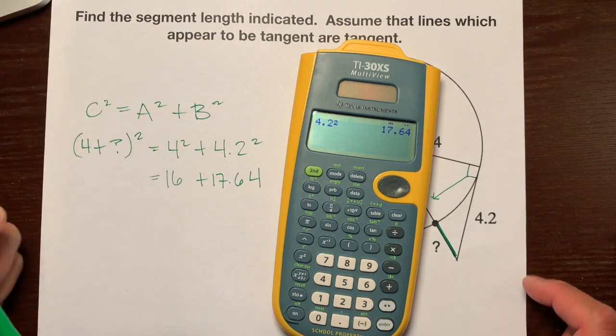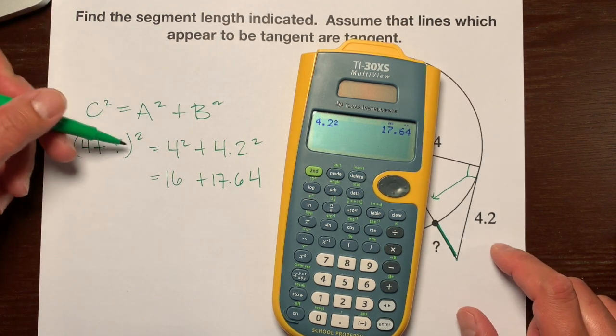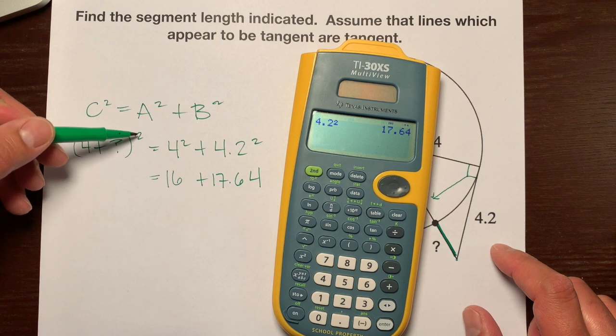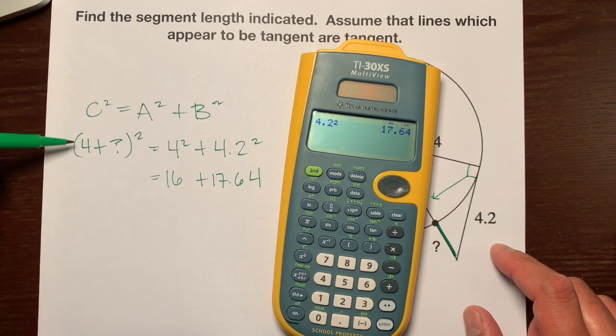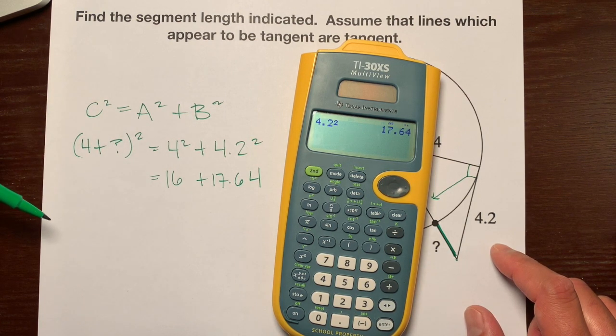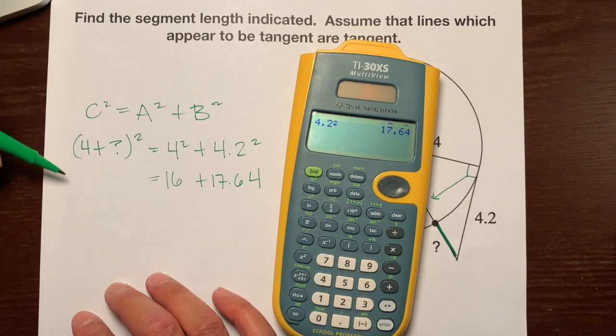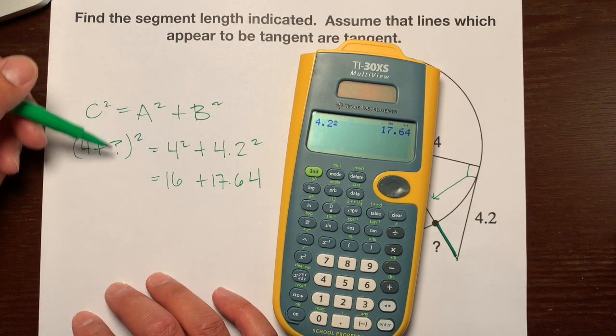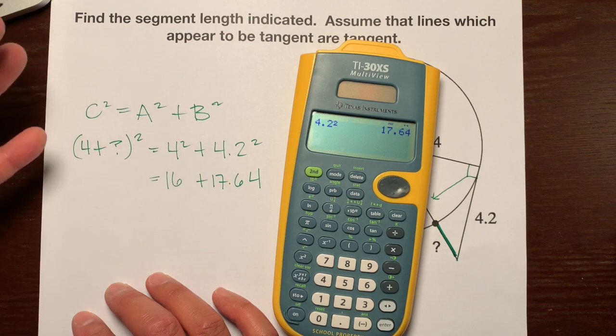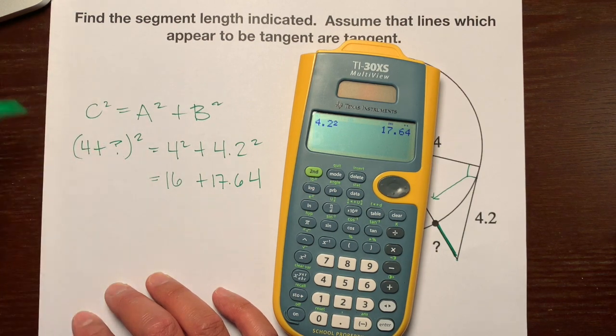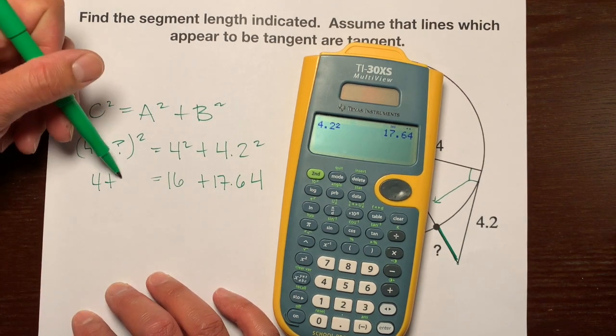you're going to be tempted to do some algebra. Definitely don't be tempted to distribute the square here and here because that's against algebra rules. You'll be tempted to might write 4 plus question mark times 4 plus question mark because that's real algebra, but don't do that. So just bring this down.